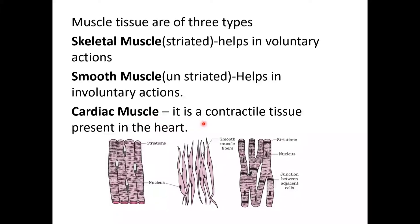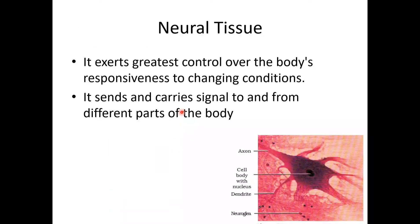Third: Cardiac muscle. It is a contractile tissue present in the heart — the heart contracts and expands. Muscle tissue related to the cardiac muscle or heart is called cardiac muscle tissue. The next type of tissue is neural tissue. Neural tissue sends and carries signals to and from different parts of the body.